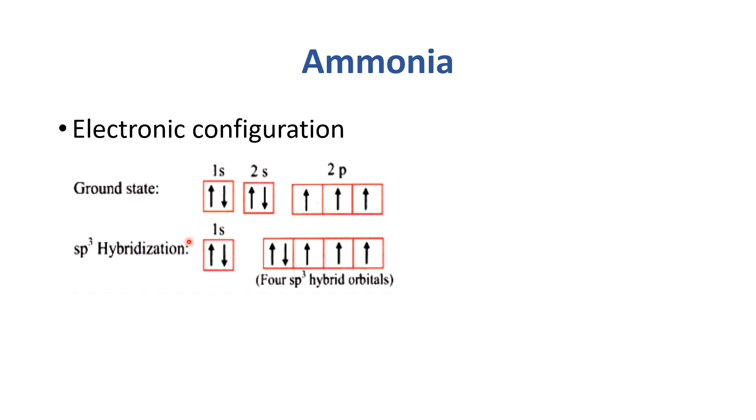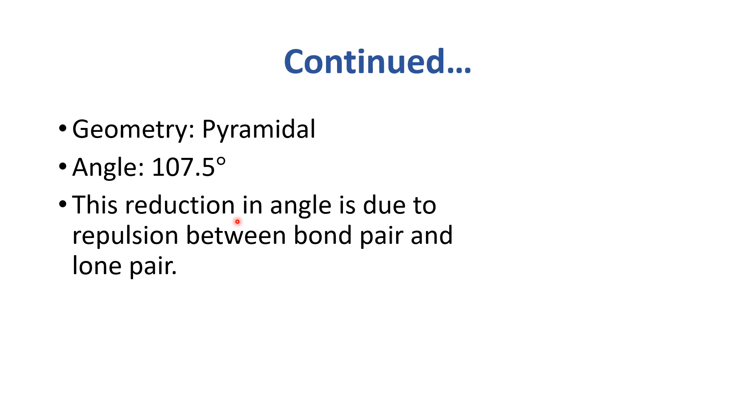For ammonia, the electronic configuration shows sp³ hybridization with one lone pair. The geometry is pyramidal with an angle of 107.5 degrees. This angle reduction is due to the repulsion produced by the lone pair on the bond pairs. One sp³ hybrid orbital accommodates two electrons as a lone pair, while the other three sp³ hybrid orbitals combine with hydrogen to complete the octet.